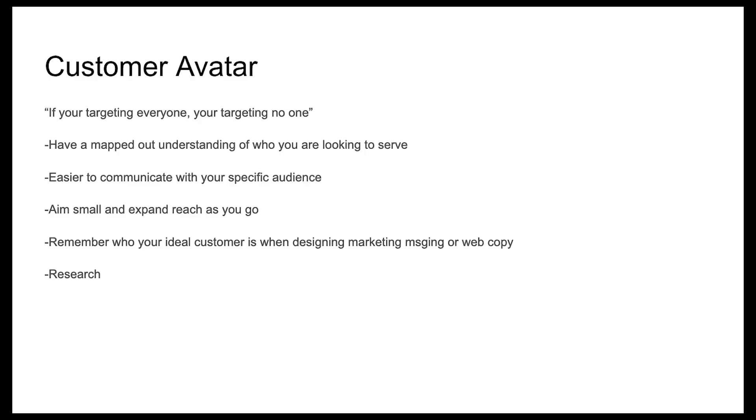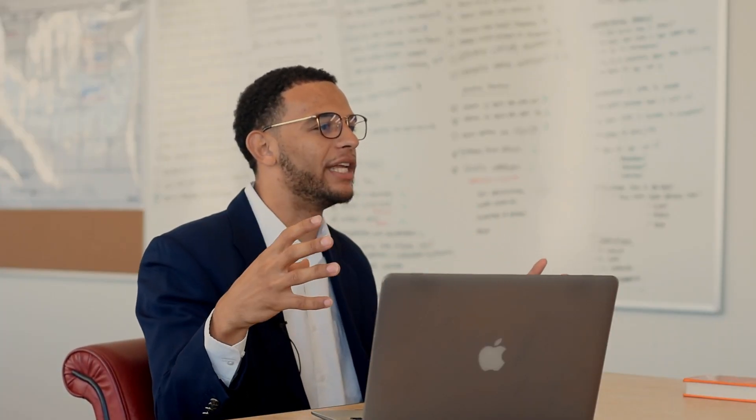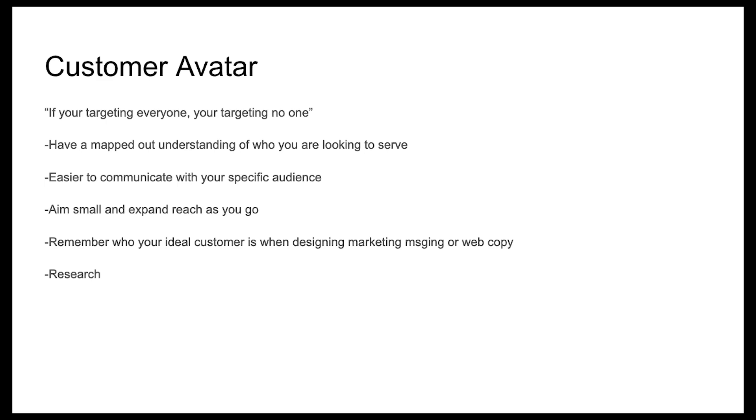One of my favorite quotes by Seth Godin is: 'If you're targeting everyone, you're targeting no one.' That's one of the worst things you can do. We try to cast this broad net that hits everybody, but we want to focus on small pools of people — a very small niche first — and really master that niche, offer the most perfect product or service for it, and then expand. We don't need a million-person audience if we can't even get our thousand-person audience. Focus on a thousand, go to ten thousand, go to a hundred thousand, and so on. The customer avatar gives you a mapped-out understanding of who you're looking to serve and makes it easier to communicate with your specific audience.